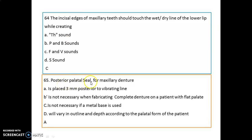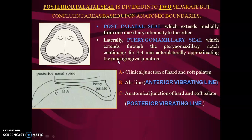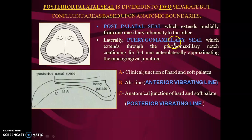The posterior palatal seal (PPS) for a maxillary denture is placed 3 mm posterior to the vibrating line. It is divided into two separate but confluent areas based on anatomic boundaries. It extends medially from one tuberosity to another tuberosity. Laterally there is a pterygomaxillary seal extending to the pterygomaxillary notch, continuing 3–4 mm anteriorly, approximating the mucogingival junction. The anterior vibrating line is produced by the sound 'ah,' while the posterior vibrating line marks the anatomical junction of hard and soft palate.